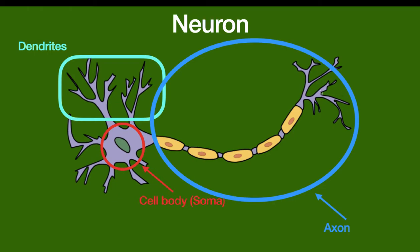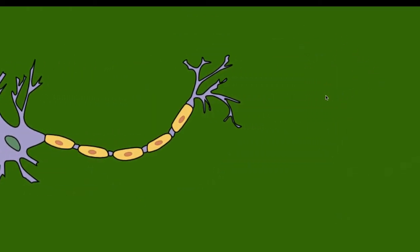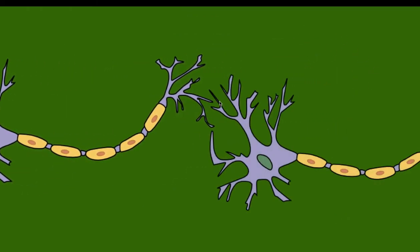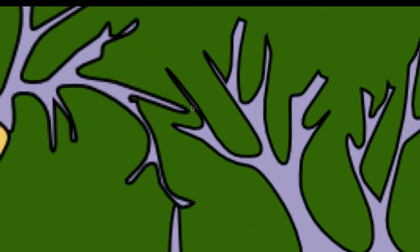This is called the axon terminal. It's going to be connected to another neuron's dendrite. If you look very closely, we see a gap — they don't touch. That gap is called the synapse. Therefore, the neuron on the left is called the presynaptic neuron, and the one on the right is called the postsynaptic neuron.